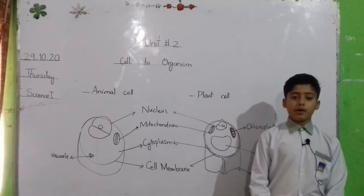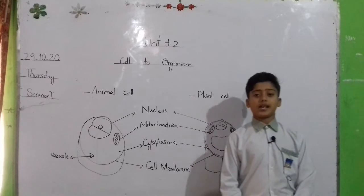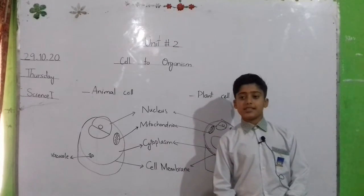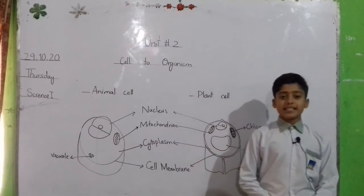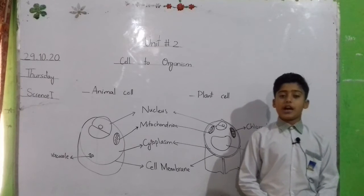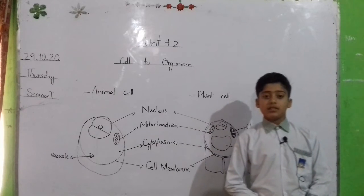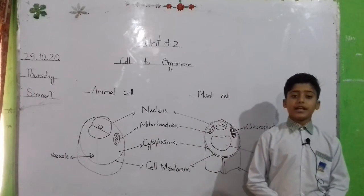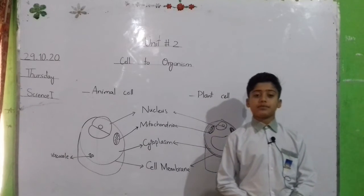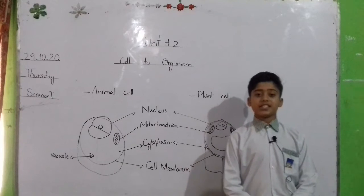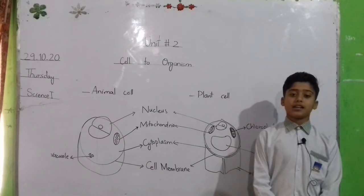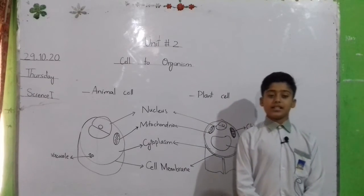Assalamu Alaikum. I am Muhammad Sharif from class 6. Cell. Cell is a basic structure and functional unit of life. Cell is made up of small subunits. These subunits are called cell organelles.